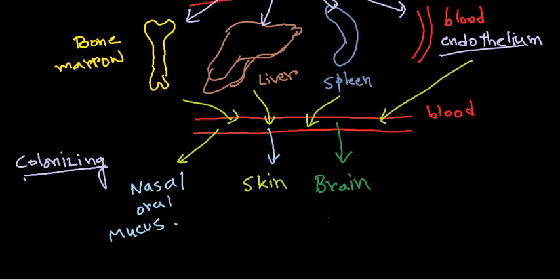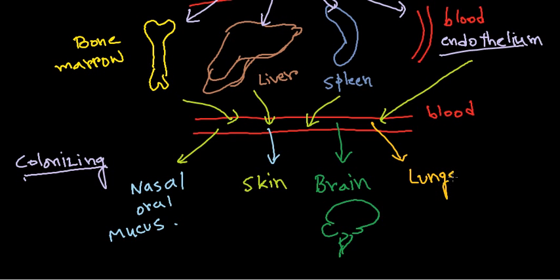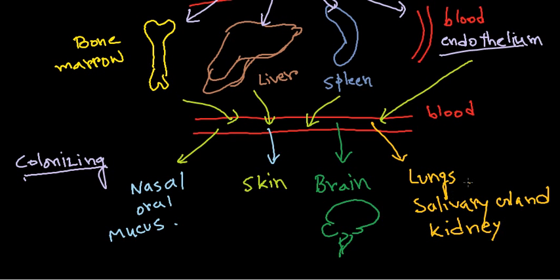The virus can also colonize the brain, which is very, very dangerous. It can colonize the lungs, salivary glands, and kidneys. These are the places that can be further colonized during secondary spread.